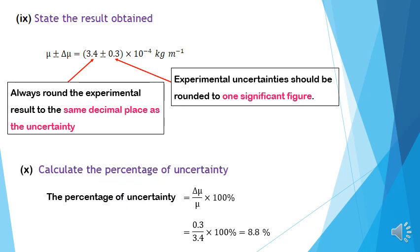Roman 10: calculate the percentage of uncertainty. The percentage of uncertainty is calculated using the formula (Δμ / μ) × 100%. By substituting the values of Δμ and μ, the percentage of uncertainty obtained is 8.8%, which is less than 15%, meaning the result obtained for μ ± Δμ is acceptable.